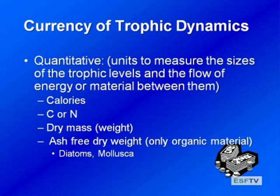We could also try to more quantitatively measure the linkages. There are several ways to quantify the material or energy flow between components of our food chain or food web. One approach is the calories transferred between one group and another — just like looking at the calories on a food product label. We could look at a fish's diet and say how many calories are in the prey it's consuming. That's a measure of energy flow.